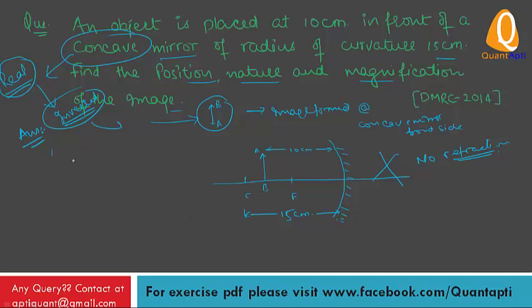Now this type of question, we always use mirror equation. What is mirror equation? That is 1 upon V plus 1 upon U is equal to 1 upon F, where V is the image distance, U is the object distance, F is the focal length. What is given? Object distance is 10 cm. U is given, V we will find, F is not given.